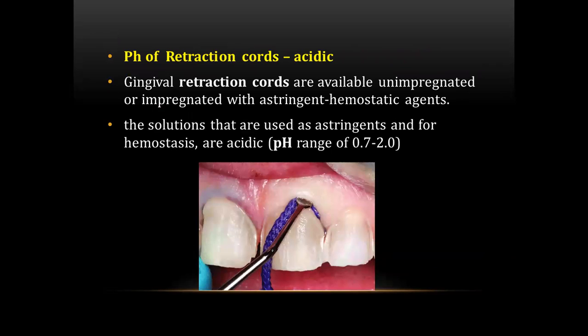The next question is about the pH of retraction cord. The pH of retraction cords is acidic. The astringent and hemostatic agents impregnated in retraction cord are generally acidic, with a pH range from 0.7 to 2.